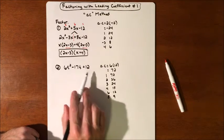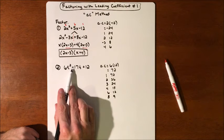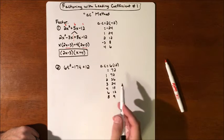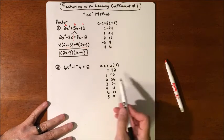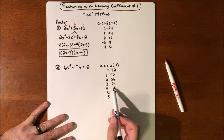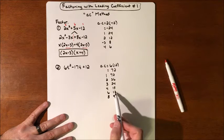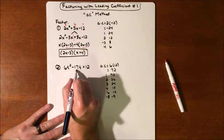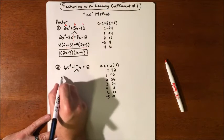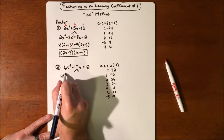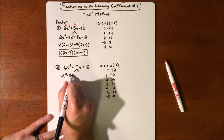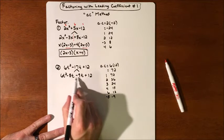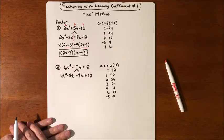We need numbers that multiply to 72, which means their signs are going to be the same. Since we need them to add up to negative 17, both numbers must be negative. The pair 8 and 9 add up to 17, so with negatives they add up to negative 17. So we separate our middle term into 6t² minus 8t minus 9t plus 12, which is how we break up the negative 17t.